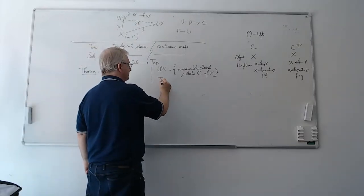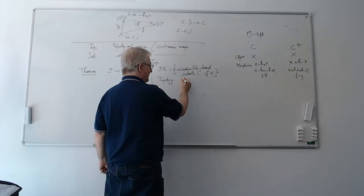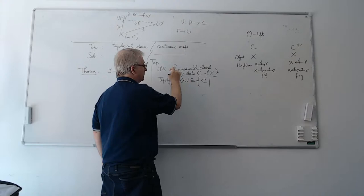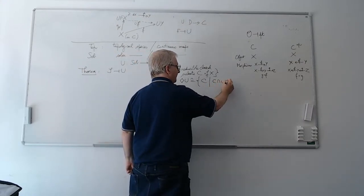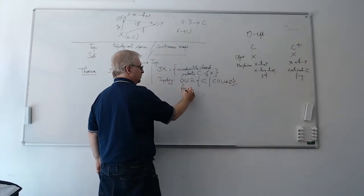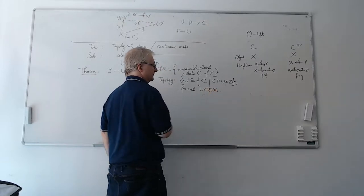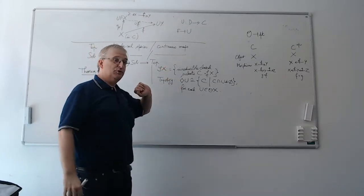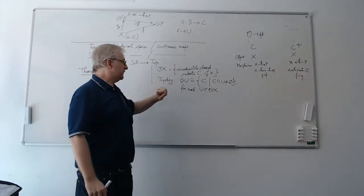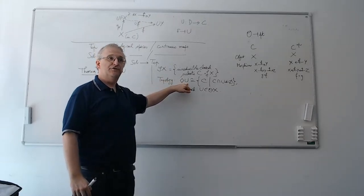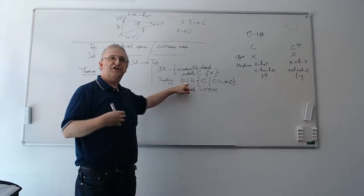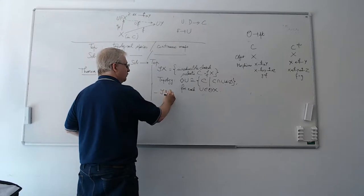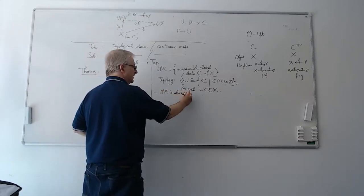We had seen that the ◇ operator on S of x commutes with finite intersections and commutes with arbitrary unions. So in particular, that class of objects is closed under finite intersections and arbitrary unions — this is already the full topology, I don't even have to say it generates a topology. We had seen that S of x is always sober, which will be useful later.